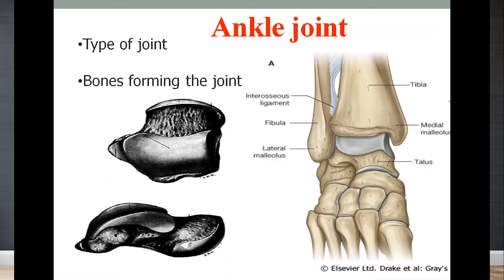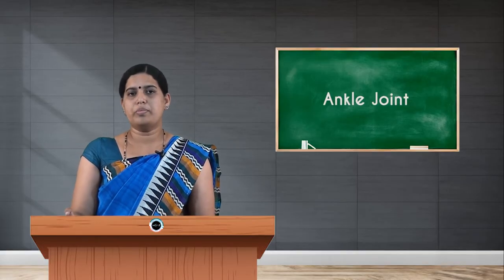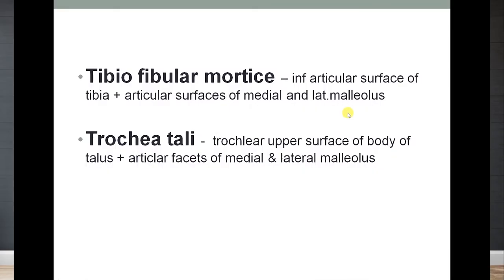The bones forming the joint: inferiorly it is the superior surface of the body of the talus, and above it is the inferior articular surface of the tibia along with the facets of the medial and lateral malleolus. The tibiofibular mortise consists of the inferior articular surface of the tibia and the trochlear tali, which is the superior articular facet on the body of the talus.